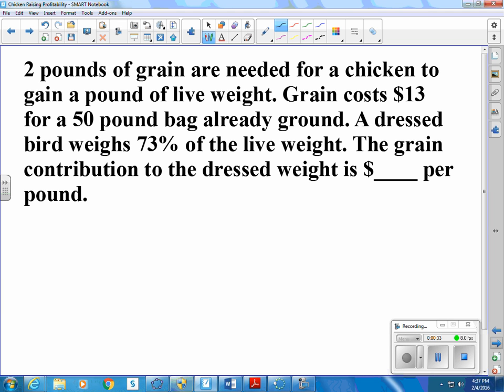So let's figure out price per pound for live weight. Well, let's figure out price per pound for grain first. So $13 for 50 pounds. That turns out to be 26 cents per pound.